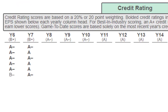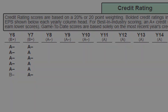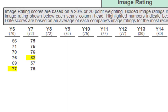Next we have the credit rating. As stated in previous videos, it's usually pretty easy for teams to get up to the A or A-minus credit rating. Company F made the biggest jump from B-minus to A-minus — great job. For image rating, everyone met expectations except Company E, which had a dip from 69 to 57. Watch out for that, Company E, because you at least want to meet expectations. Company D is best in the industry at 82.